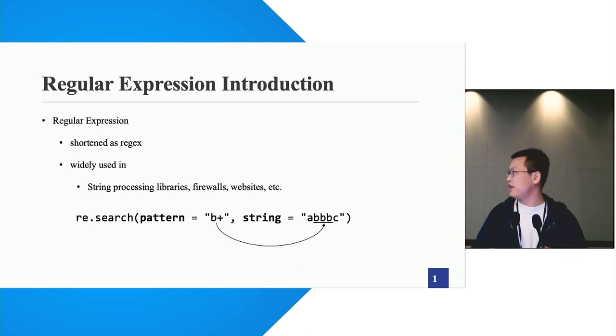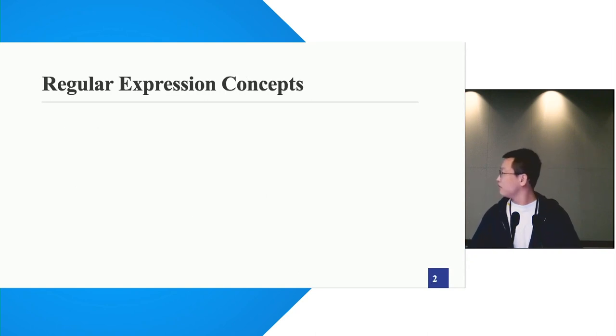For this case, the string is a, b, b, b, c. And the rejects pattern is b plus, where the plus sign indicates that the previous letter b should occur at least once. So the final match result of this example is b, b, b.